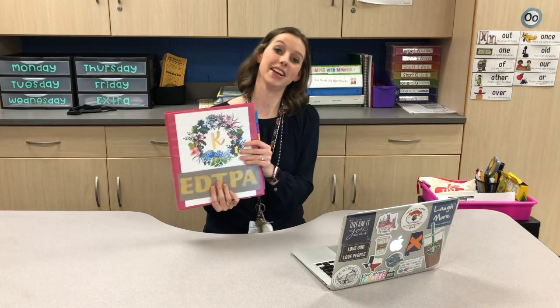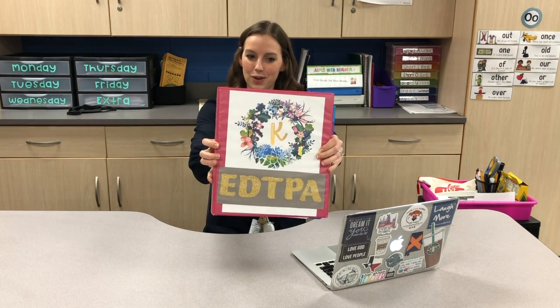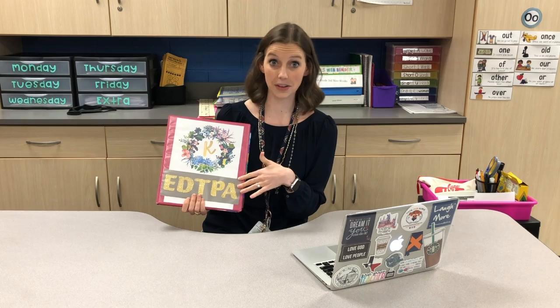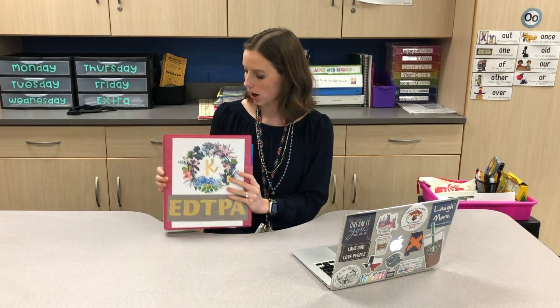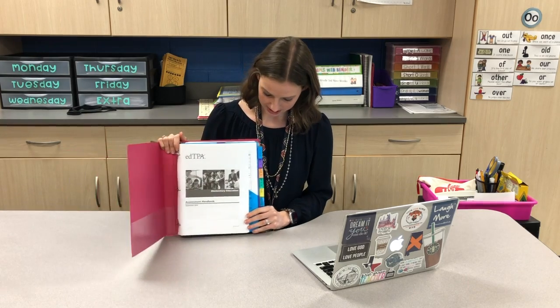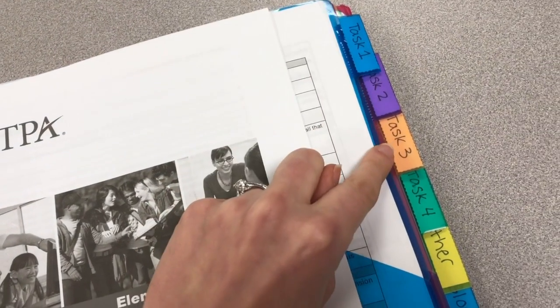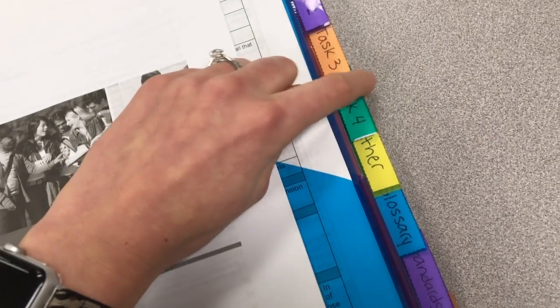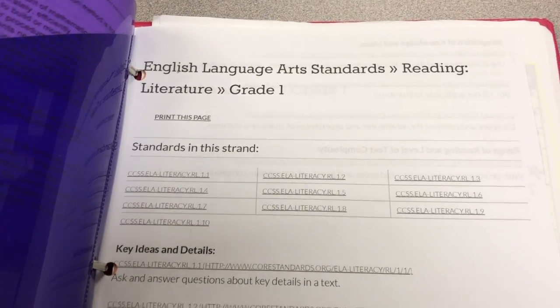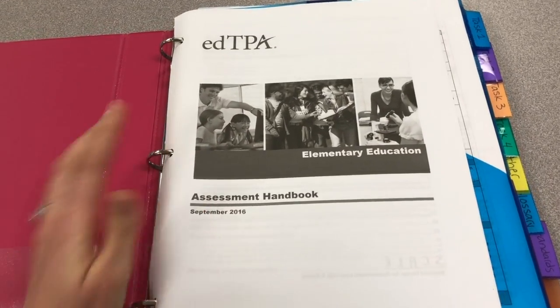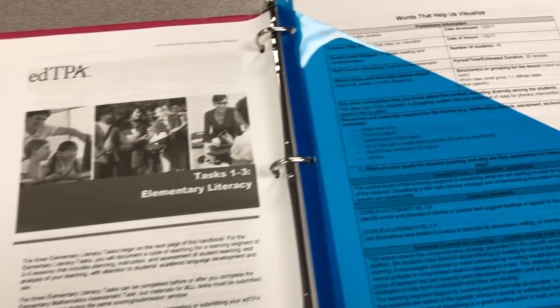Let me show you what I did with my handbook. This is my handy edTPA binder — yes, I was extremely extra and decorated the cover. I printed out the handbook and used divider tabs to separate it into all my different tasks: a tab for task one, task two, task three, task four, a section for other, a glossary section, and I also printed out the state standards for the grade level I was in. I used the tabs to hold printouts of lesson plans and the back side to hold student work, so I could keep everything in one place.